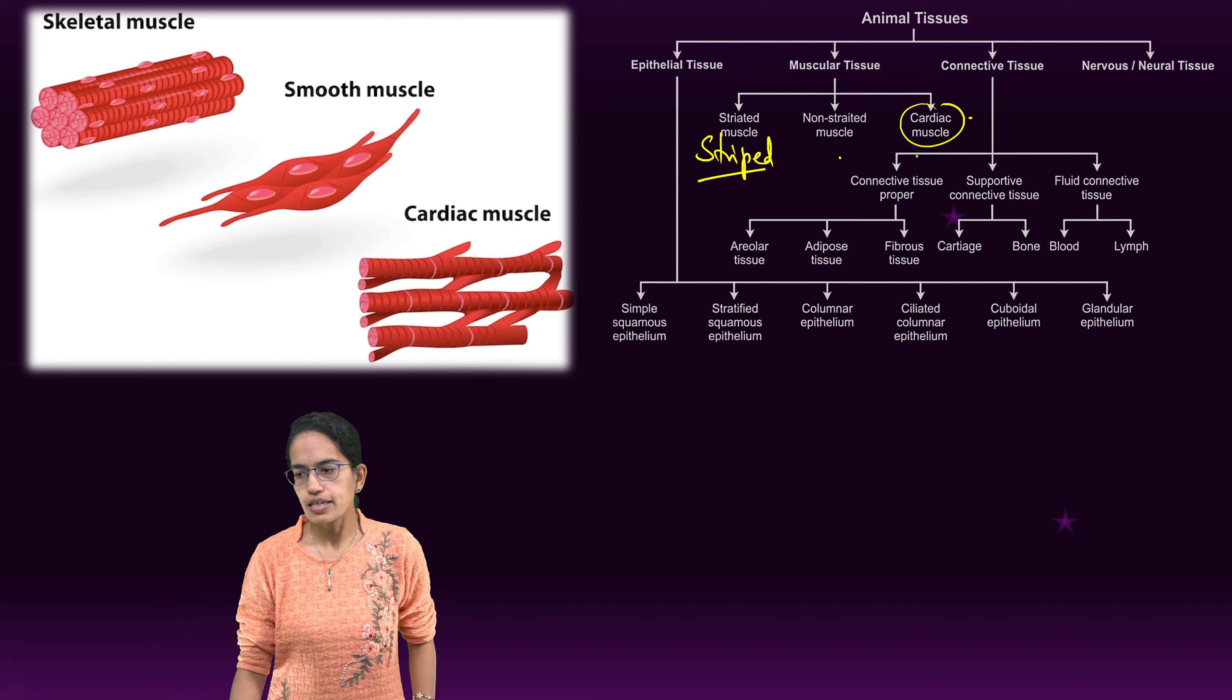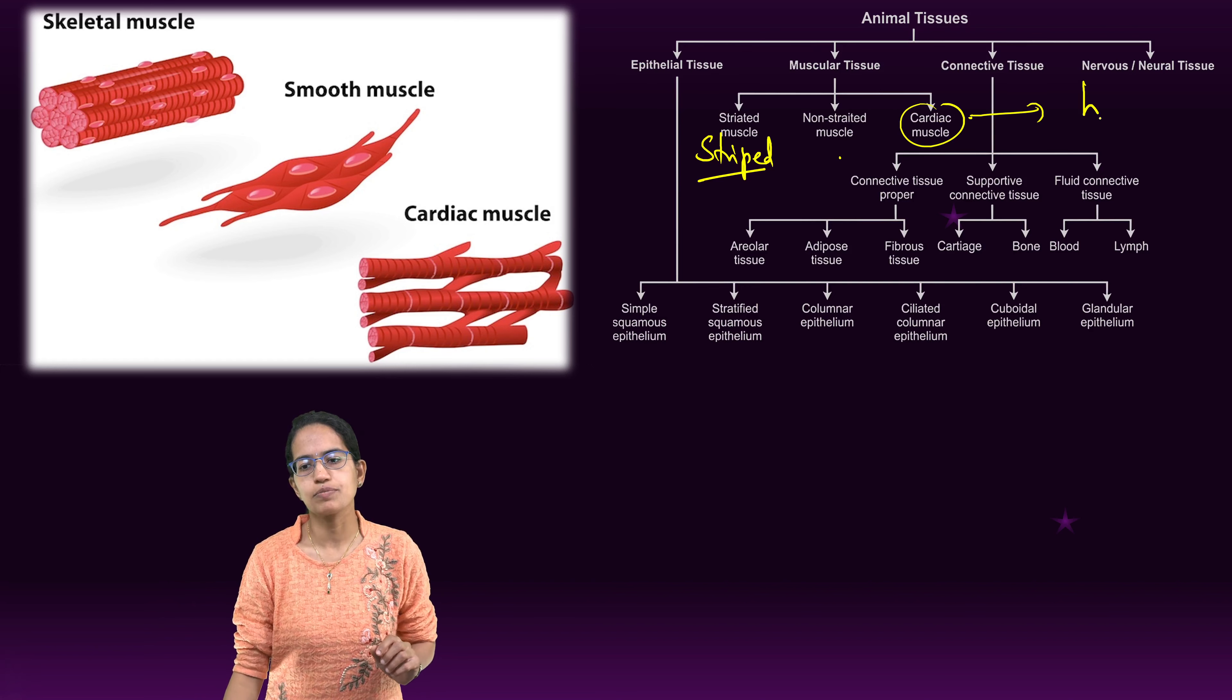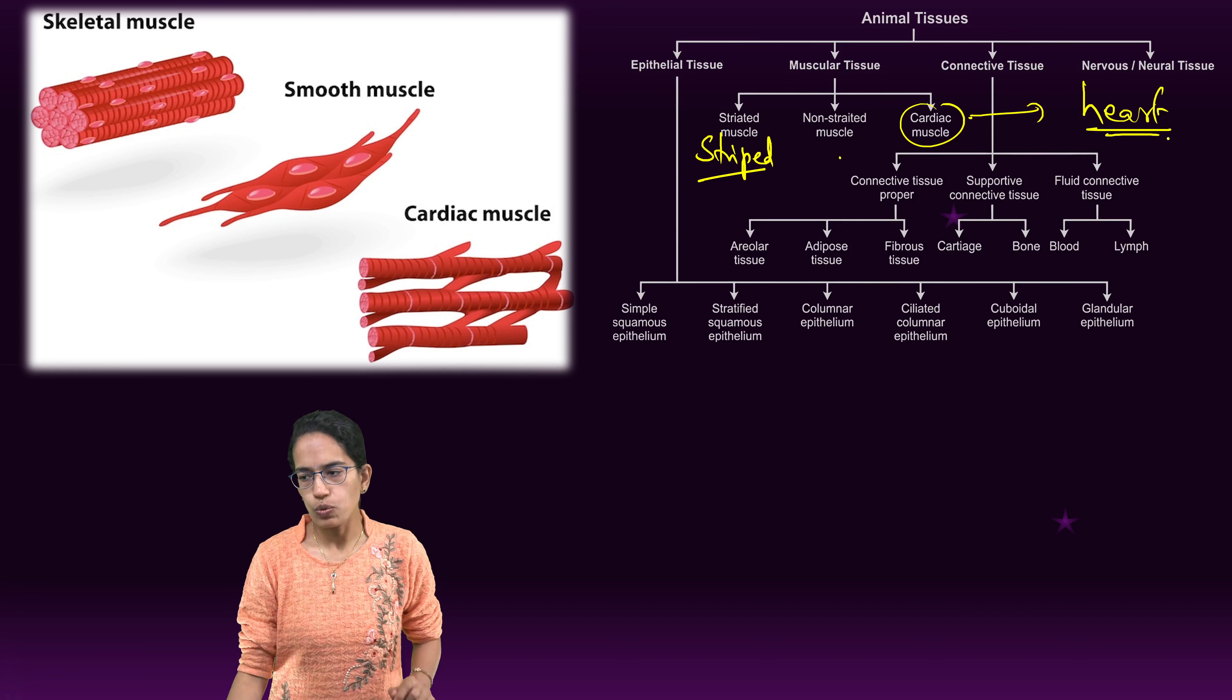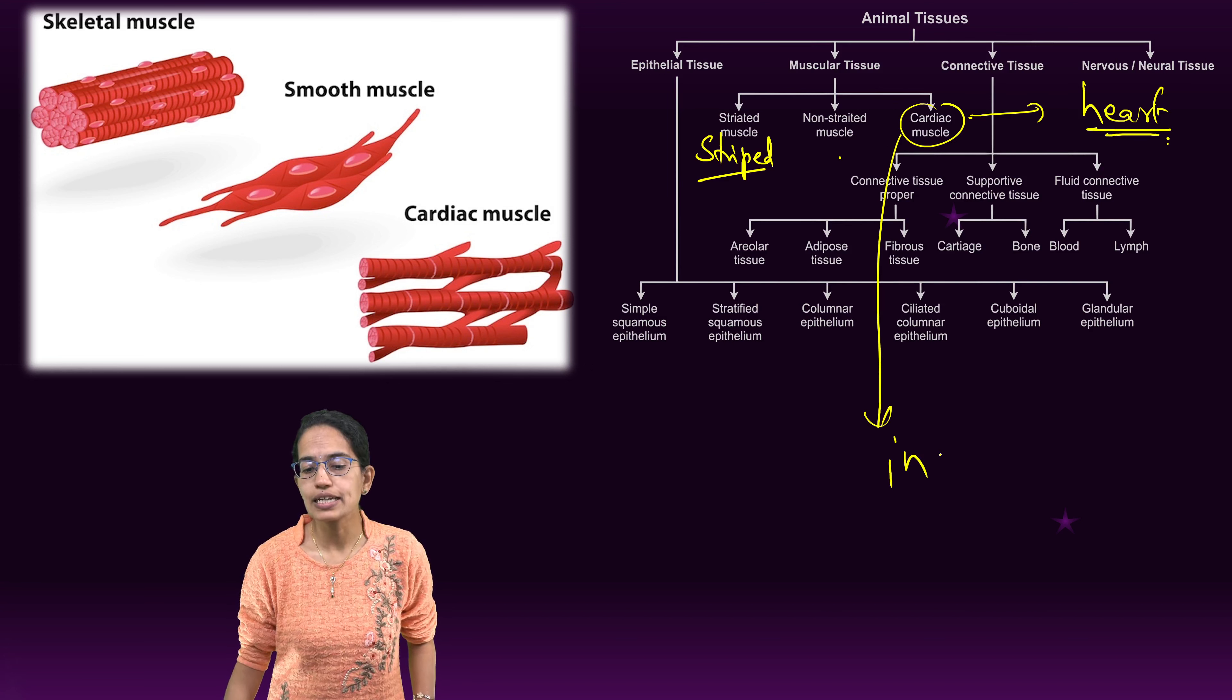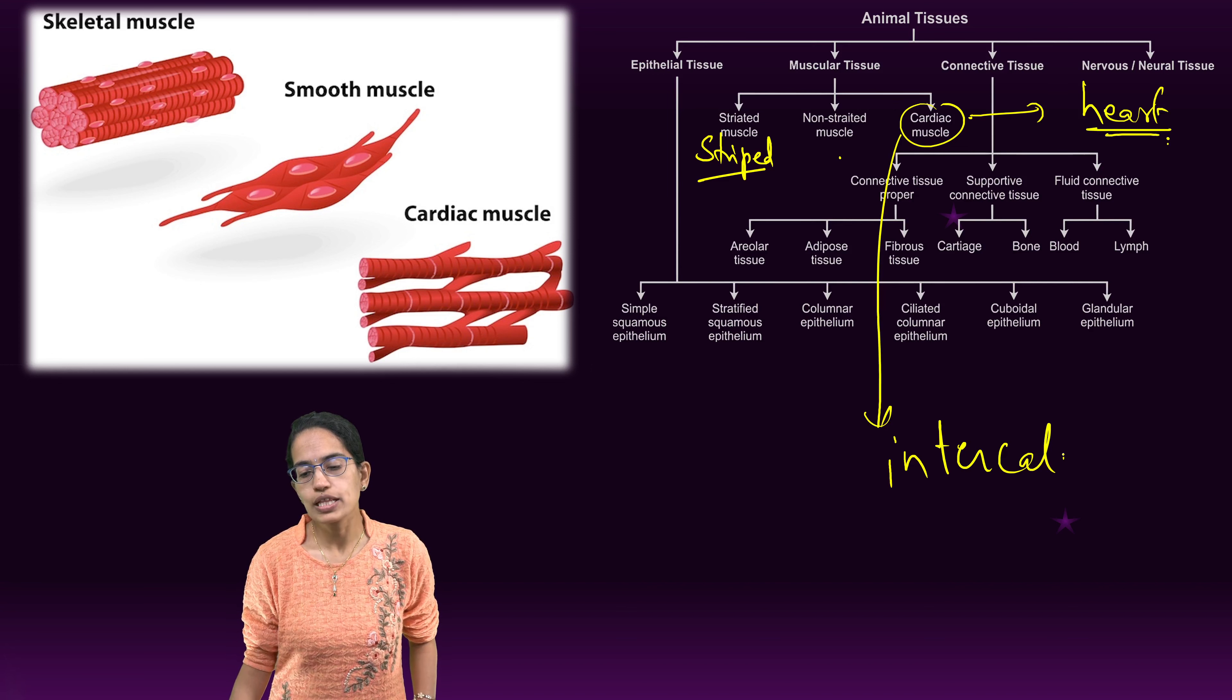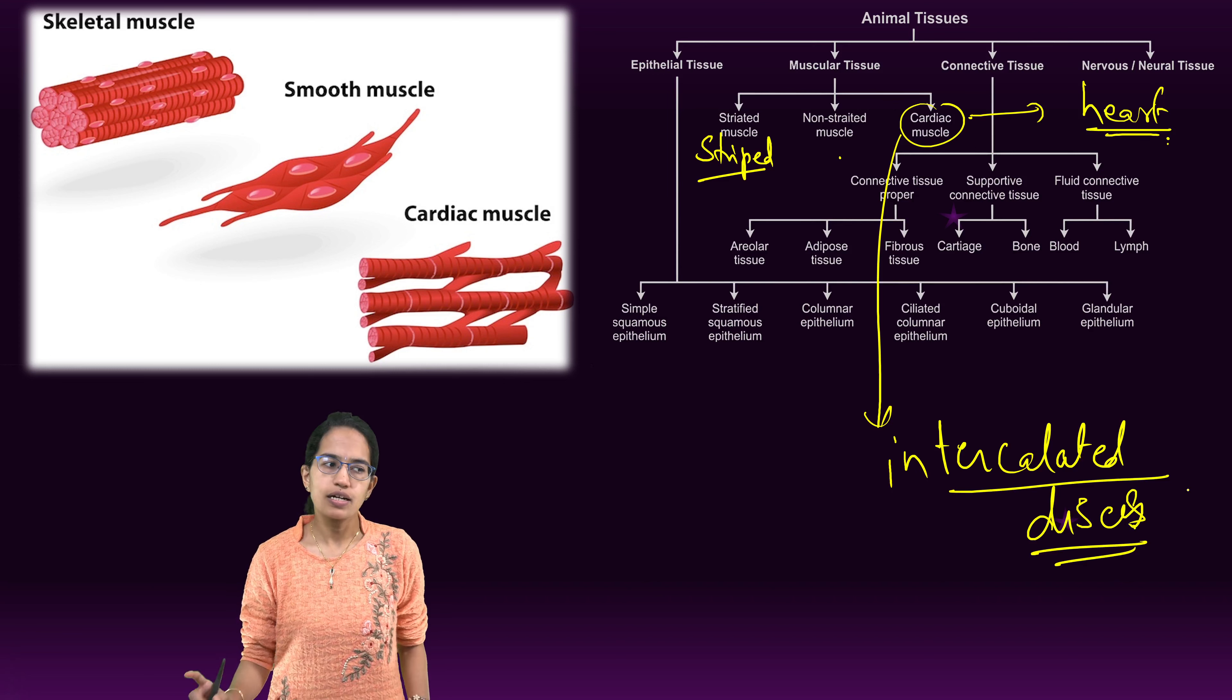Cardiac muscle is an involuntary muscle which is present only in the heart, as the name suggests. It is very important that it has intercalated discs. The only muscular tissue where intercalated discs are present is in the cardiac muscle.